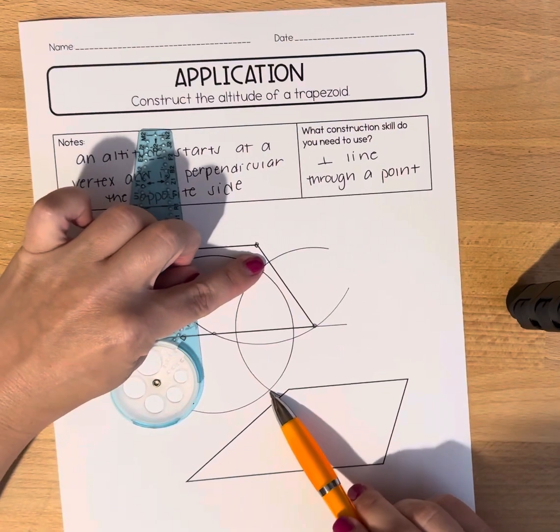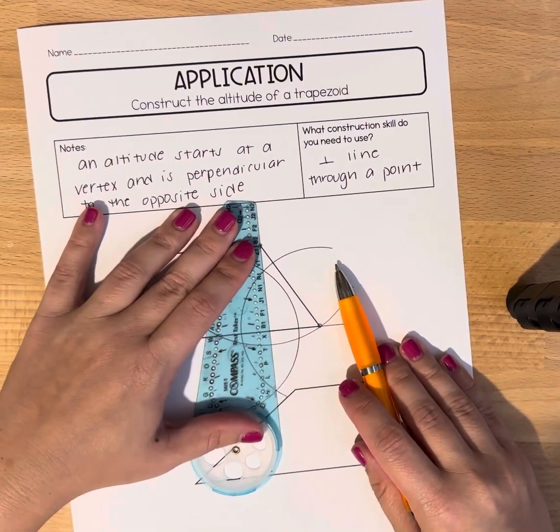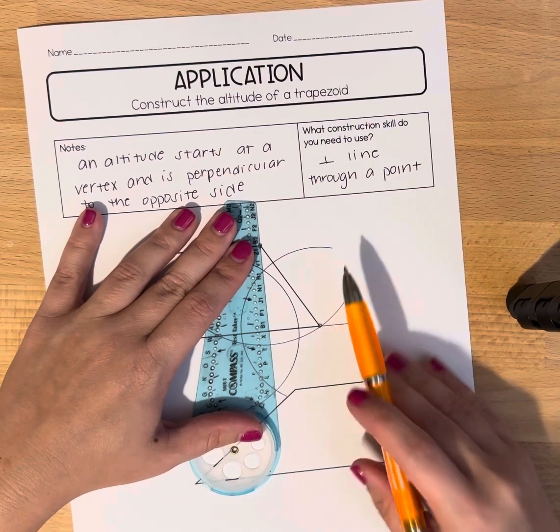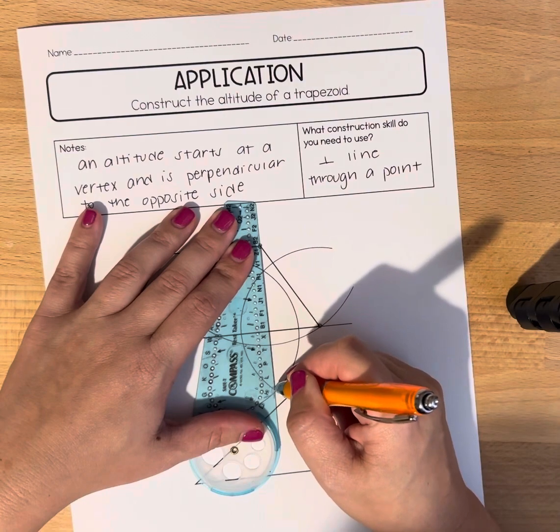And we want those two arcs to cross one another and we are going to use our compass as a straight edge or grab a ruler to use as a straight edge and we are going to make a line that connects through that.